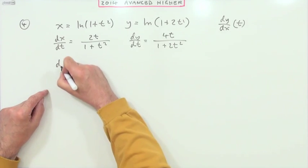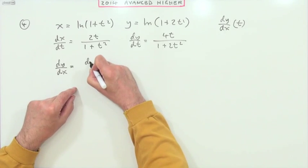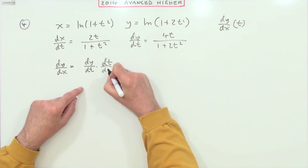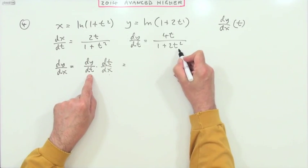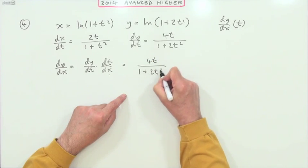Then if I want dy/dx, then I could say well I've got dy/dt, so multiplying that by dt/dx will give me dy/dx. So dy/dt is 4t over one plus 2t squared.